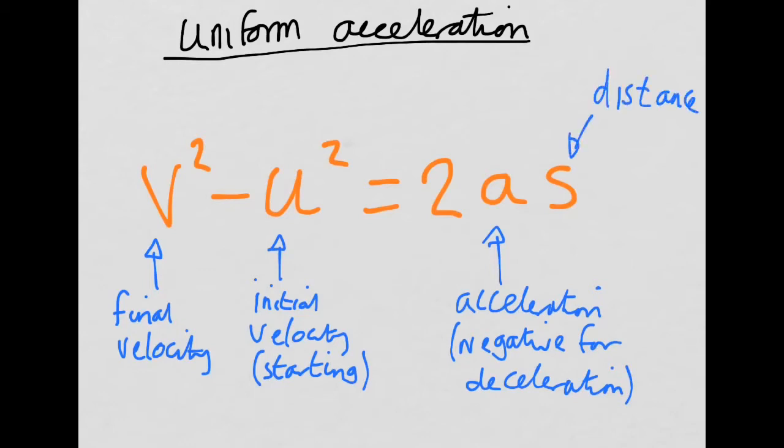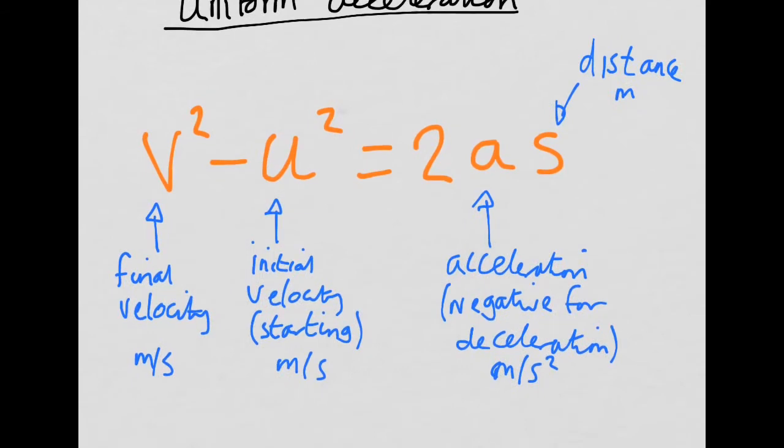So remember, final velocity and initial velocity are both in meters per second. Acceleration is in meters per second squared, and distance is in meters. So there's our equation. Now, this, thankfully, you will be given this equation if you need it.